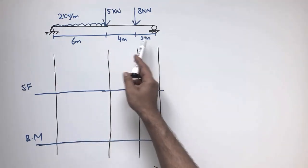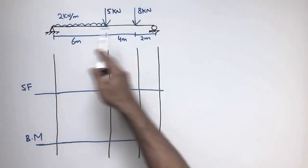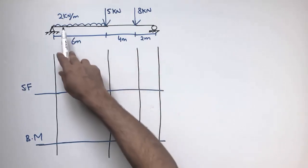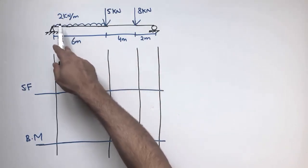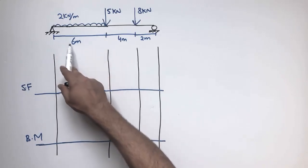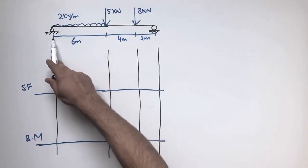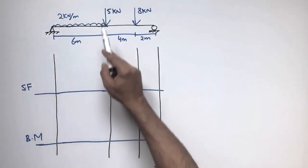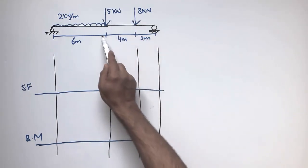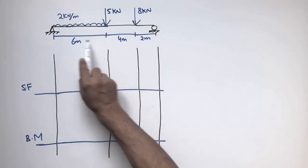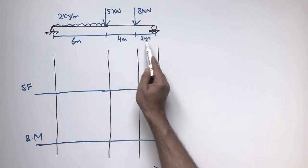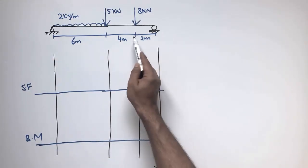There is a simply supported beam with a hinge support on one side and a roller support on the other end. A 2 kN/m uniformly distributed load acts on this beam over a length of 6 meters from the left end. There are two concentrated loads: 5 kN at 6 meters from the left end, and 8 kN at 2 meters from the right support.